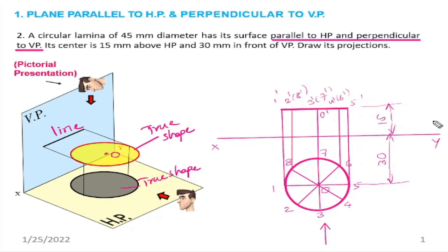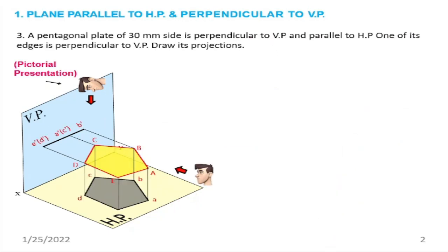This is the solution for Problem 1: when a plane is parallel to HP and perpendicular to VP, the top view shows the true shape and the front view shows only a line.